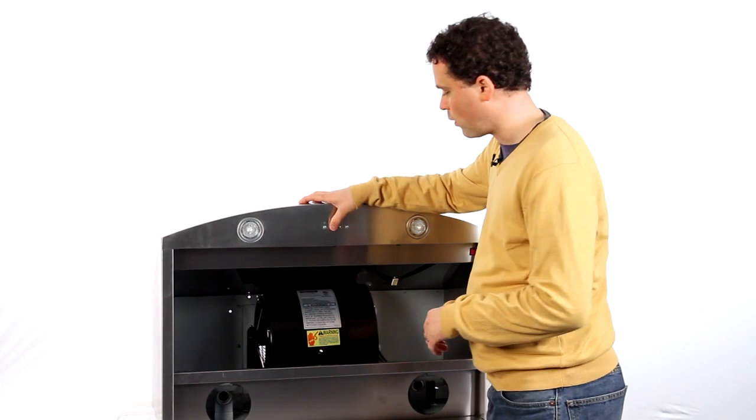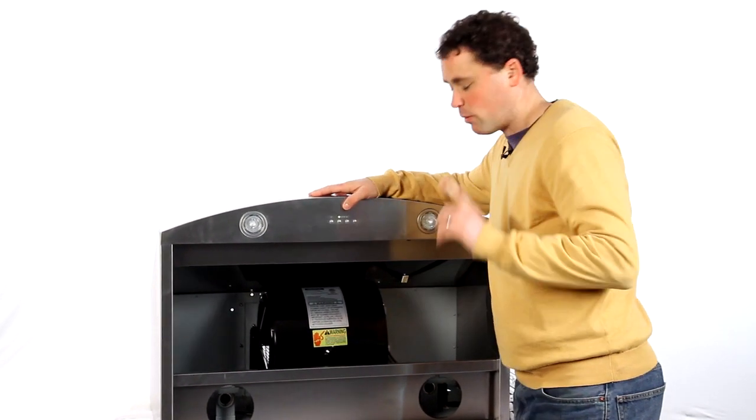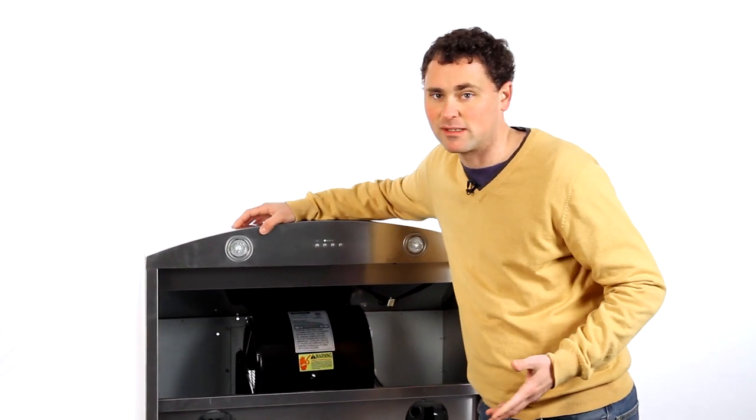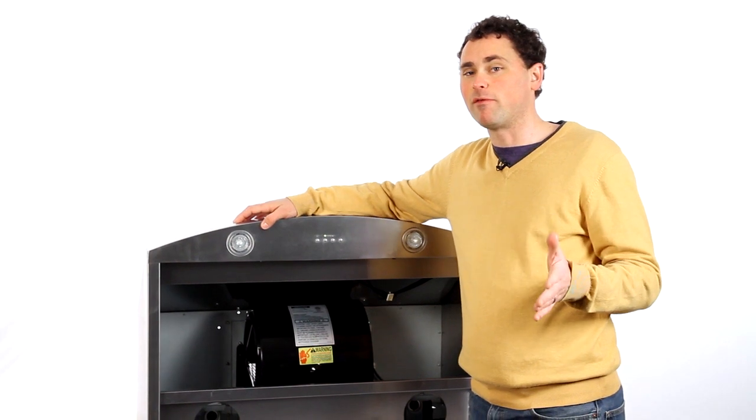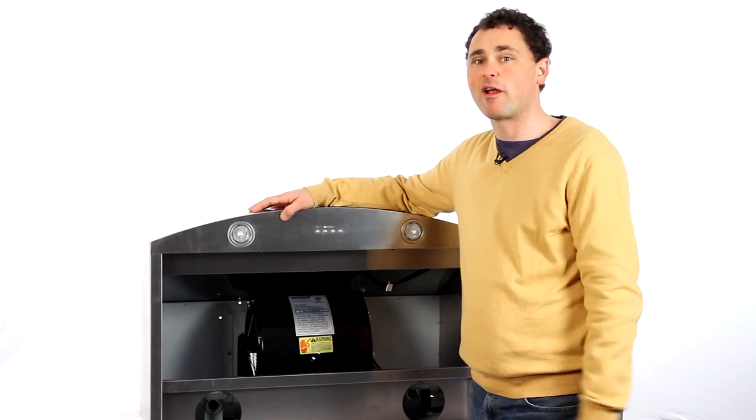Right here we have your 1000 CFM four-speed blower. 1000 CFM is really powerful for a range hood this size and it's going to take care of all of your cooking needs. But not only is it very powerful, it's also super quiet. It's running right now and you can hear how quiet it is.